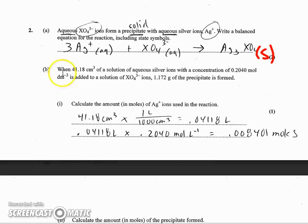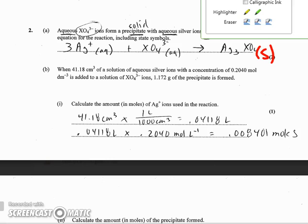And then part B, B1, calculate the amount of moles of Ag plus used in the reaction. Well, they told me I had 41.18 centimeters cubed. That's 0.04118 liters. Its concentration of 0.2040 moles per decimeter cubed. That just means moles per liter. So I just multiply them. And that cancels my liters out, leaving me with 0.008401 moles. And a number of you did have this one right, which was good to see.